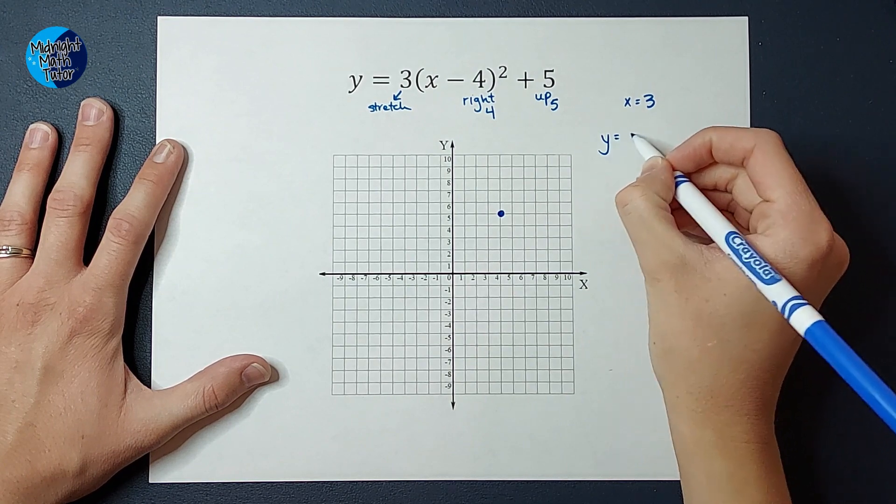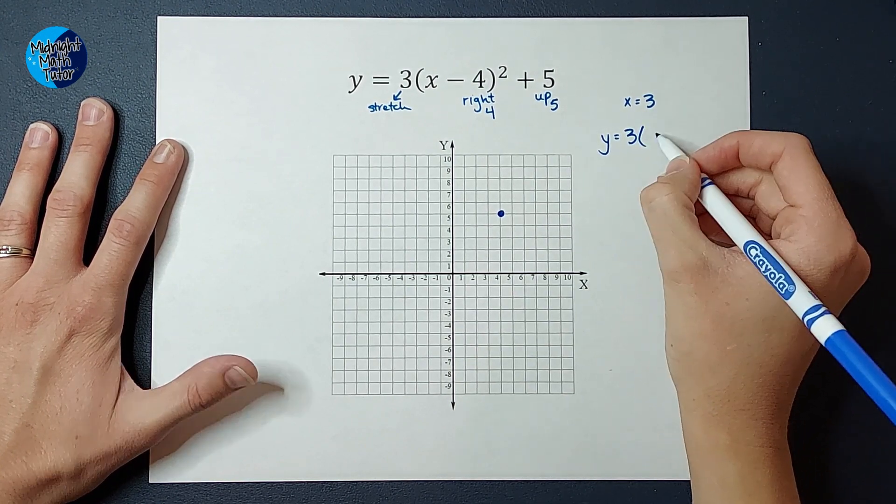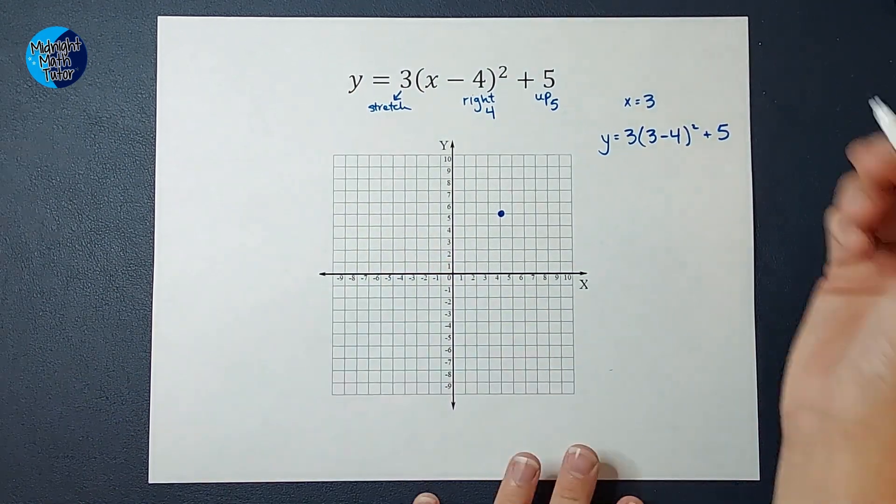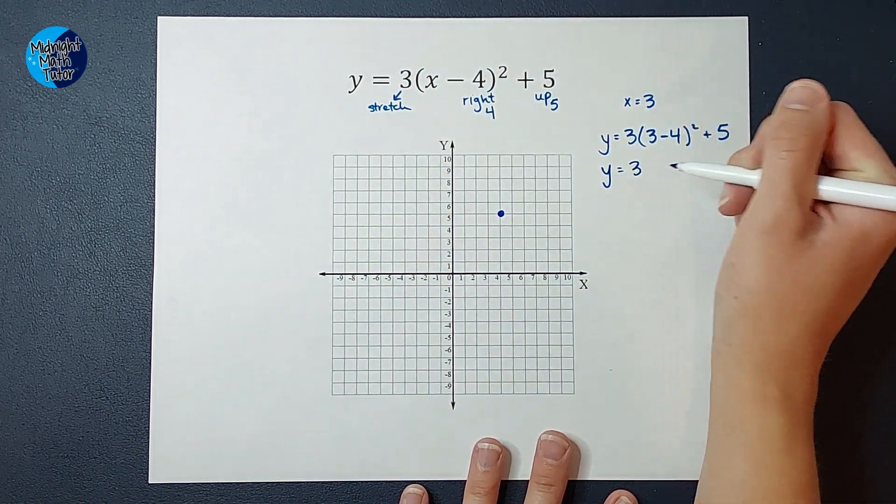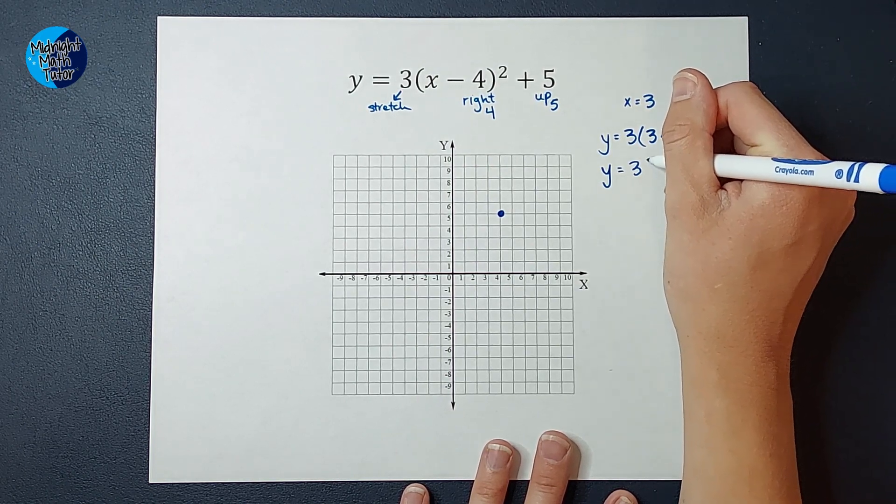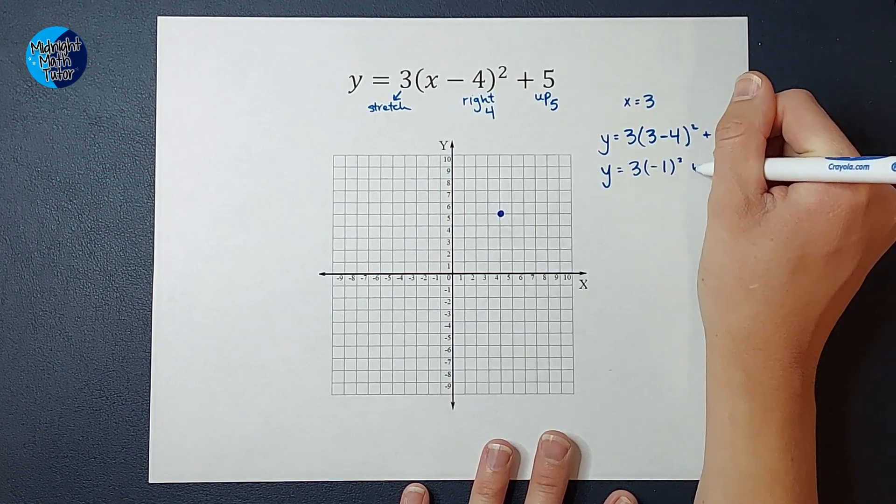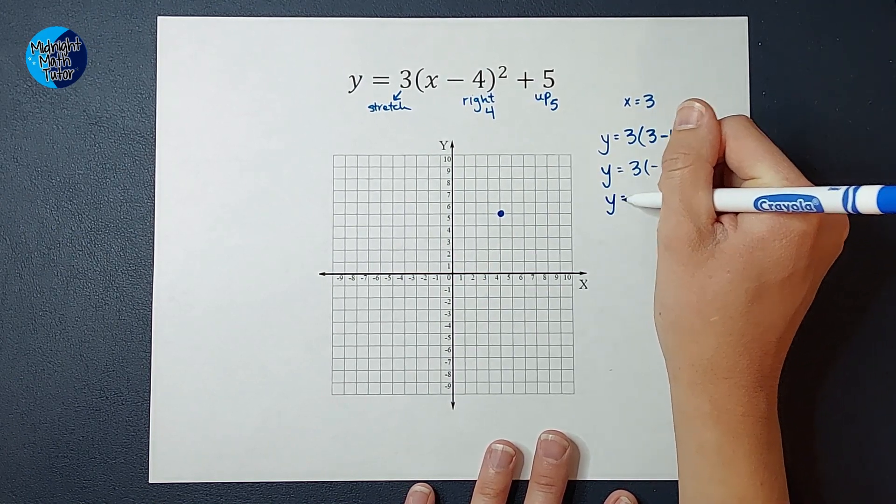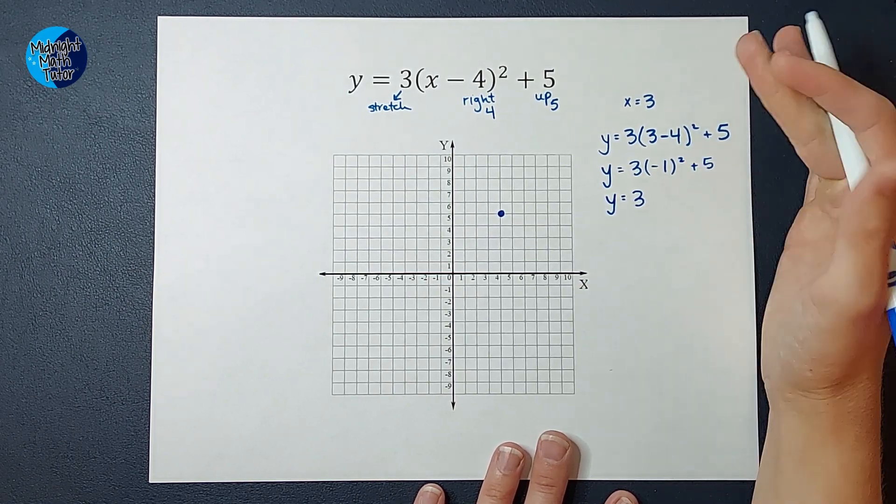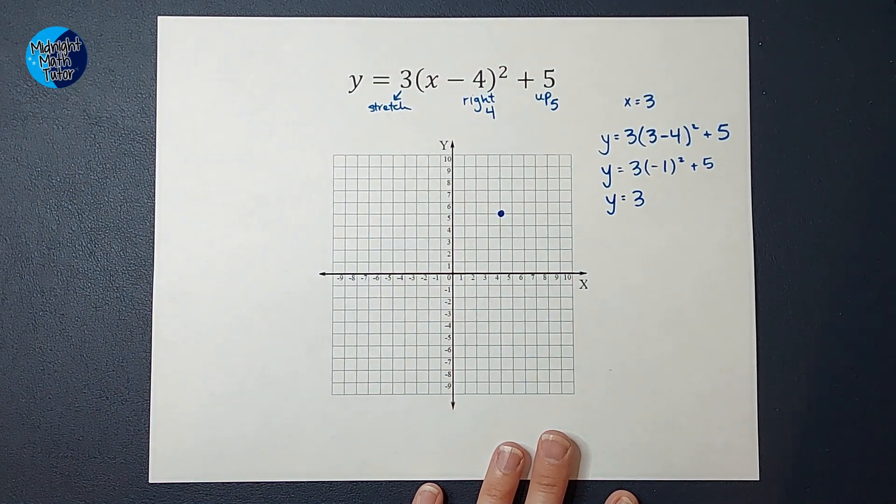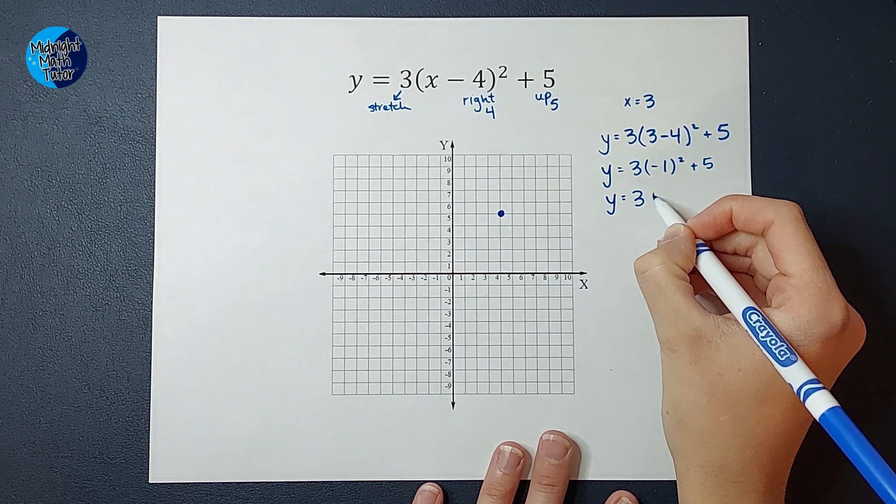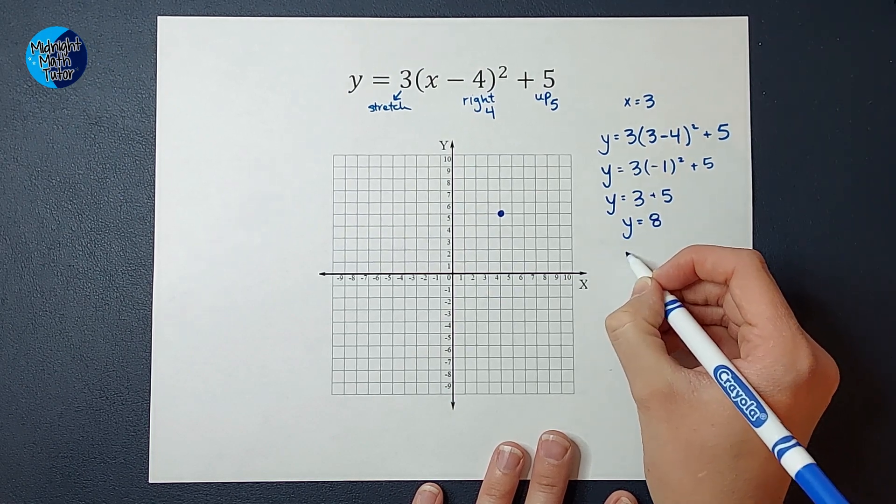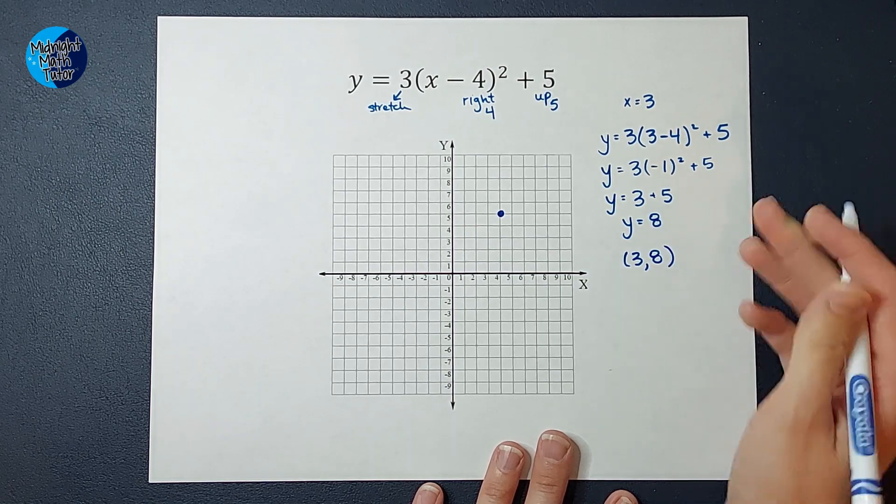So Y equals three times, we're plugging in three for X, three minus four squared plus five. I'm going to continue to solve this down. So I do what's inside the parentheses first. My kids are upstairs playing video games, so that's why you're jumping. They've been on like a boss level or something, and they've been very excited. Three minus four gives me negative one squared plus five. Y equals three times negative one squared is negative one times negative one, so that gives me a positive one. So it would be three times one, which is just three, and then we still have the plus five. Three plus five gives me eight.